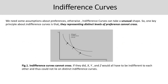Given the assumptions about consumer preferences — completeness, reflexivity, and transitivity — we have another assumption to simplify our understanding when dealing with consumer choice relations. The assumption is that indifference curves cannot intersect, because they represent distinct levels of preferences.